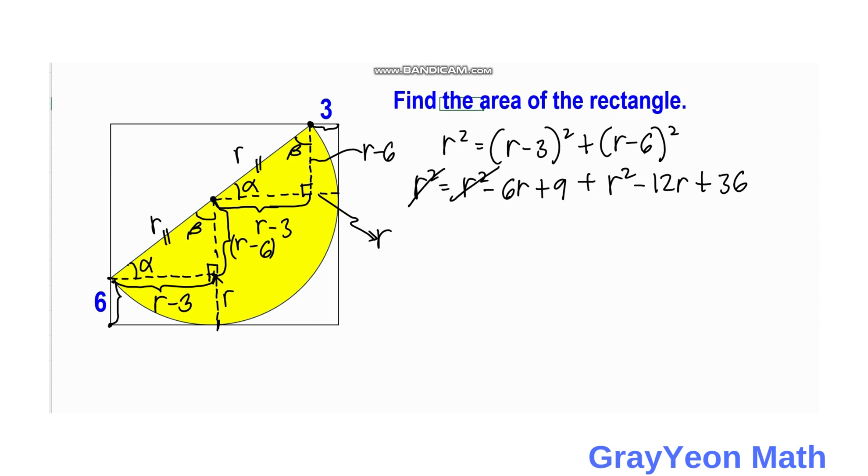Then next we cancel this R squared and simplify further. Then we have R squared, then minus 18R. If we combine these, we have plus 45 is equal to 0.